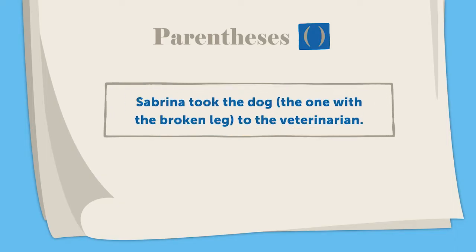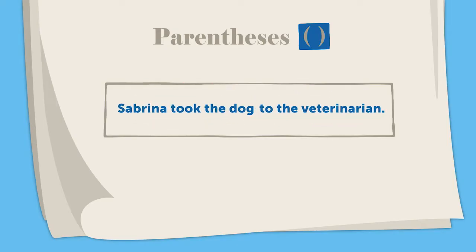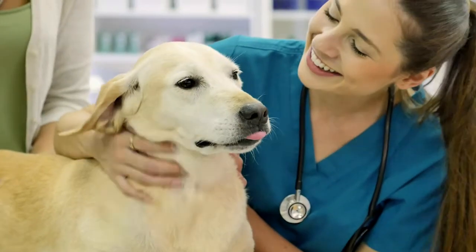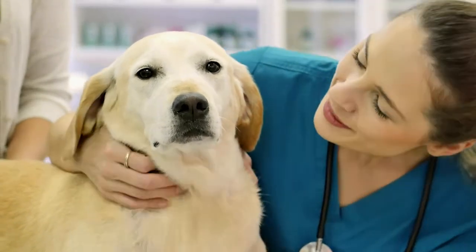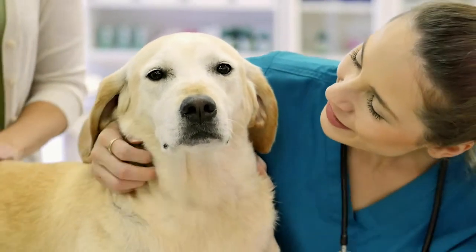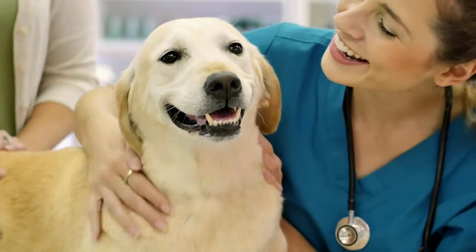"Sabrina took the dog (the one with the broken leg) to the veterinarian." The phrase "the one with the broken leg" is an interruption. Therefore, it should be enclosed by parentheses. Without the interruption, the sentence reads: "Sabrina took the dog to the veterinarian." Parentheses are used instead of commas because the information is more of an aside than part of the conversation.